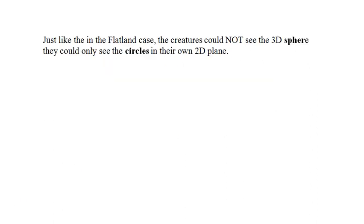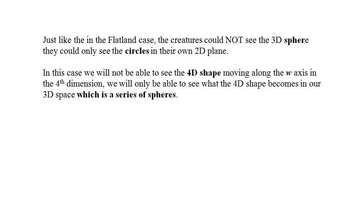Just like in the flatland case, the creatures could not see the 3D sphere, they could only see the circles in their own 2D plane. In this case, we will not be able to see the 4D shape moving along the W axis in the 4th dimension. We will only be able to see what the 4D shape becomes in our 3D space, which is a series of spheres.